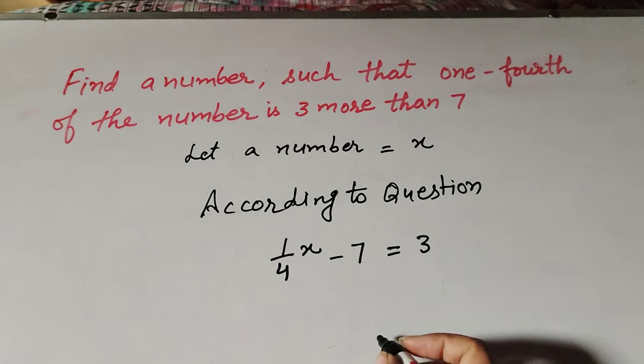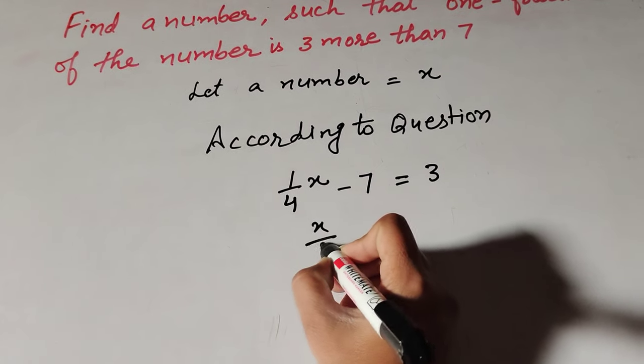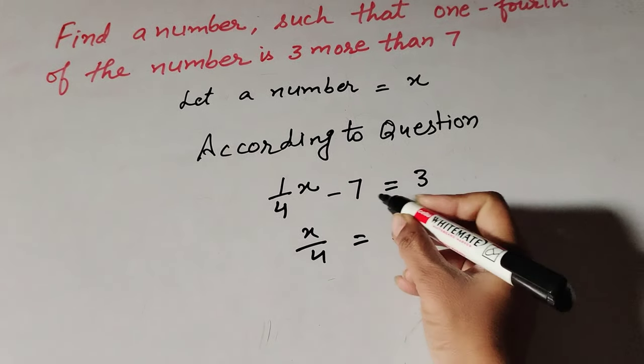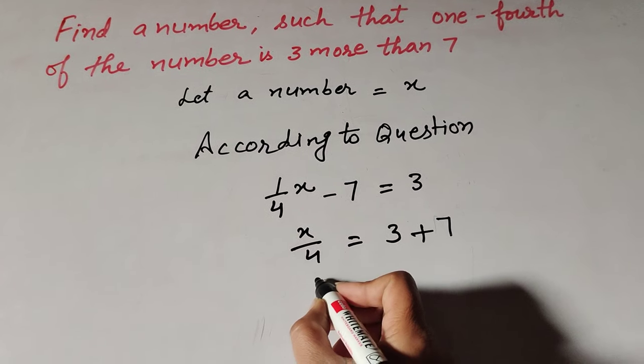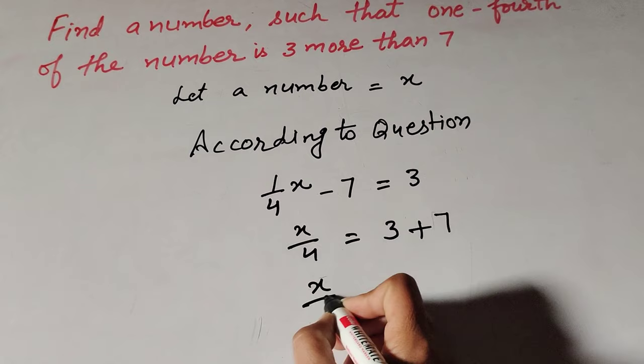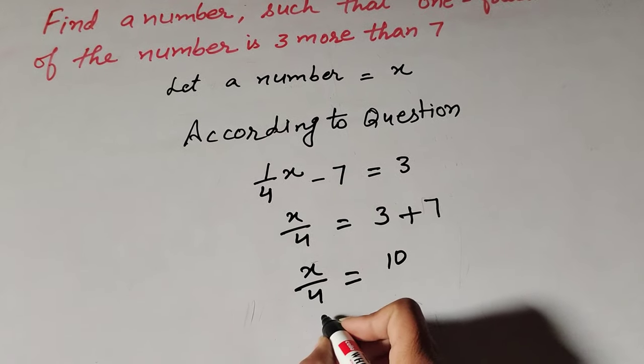Now we simplify it: x over four equals three. There is minus seven; transposing to the right-hand side, so it is plus seven. x over four equals ten, and x equals ten multiplied by four.